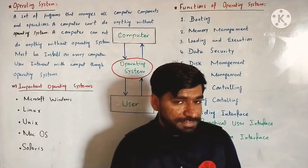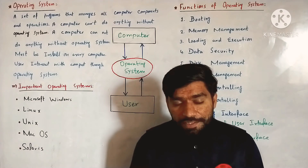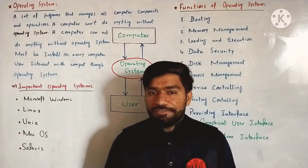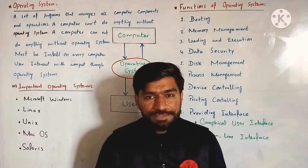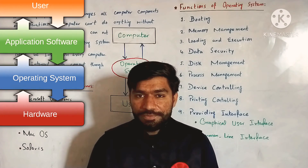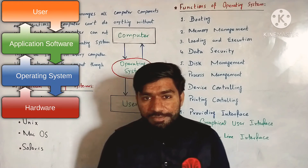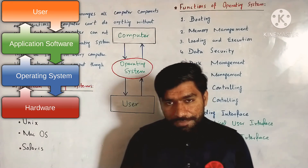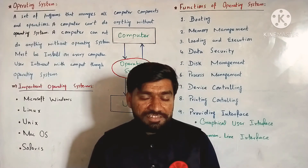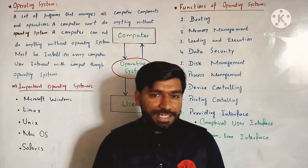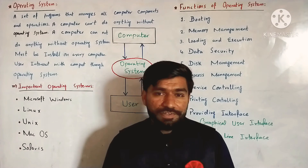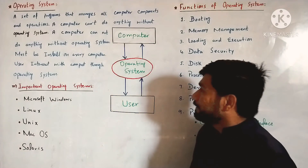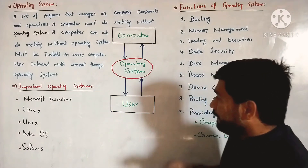Third thing is that the operating system acts as an interface between the user and the computer. This is a simple diagram to show that the operating system is the interface between the user and the computer.